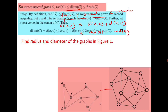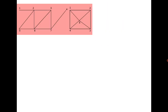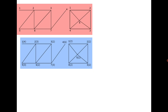The next question asks to find the radius and diameter of given graphs. For the first graph, radius is 2 and diameter is 3; for the second, radius is 2 and diameter is 2. For another pair: the first has diameter 4 and radius 2, and the second has radius 1 and diameter 2.